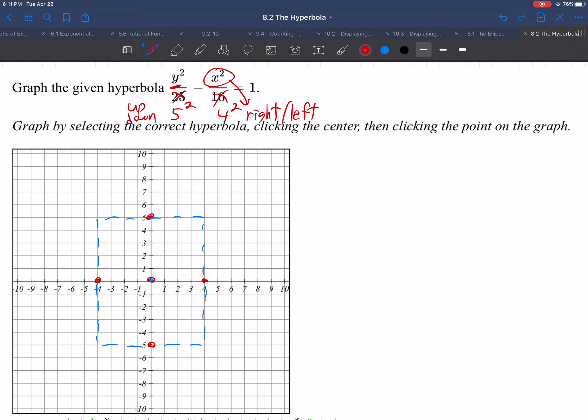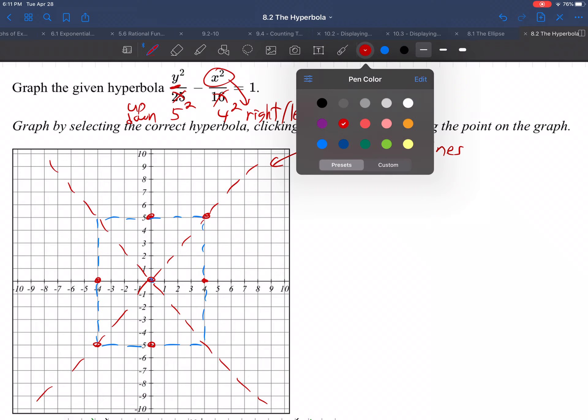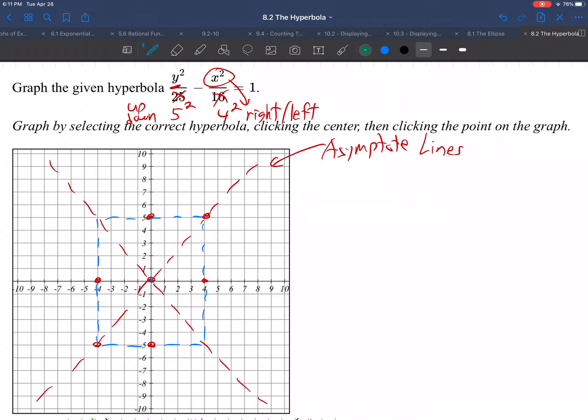And then you start from the middle and you go right through the corners of the box. Shoot right through the corners of the box like that. And those are called asymptote lines. Asymptote lines are lines that guide a graph. You've done asymptote lines before. They guide the graph.